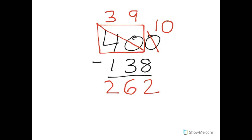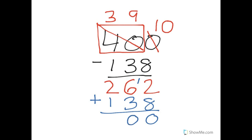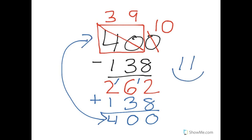And we can check that by adding our numbers back together. 138 — two plus eight is ten, put down my zero, carry my one. One plus six is seven, plus three is ten, put down my zero, carry my one. One plus two is three, and three plus one is four. And I compare it with the number up here, and look at that — they are the same. So we get a smiley face.